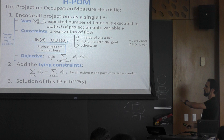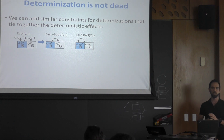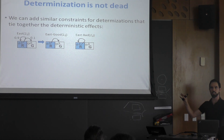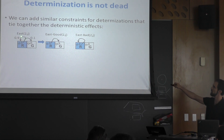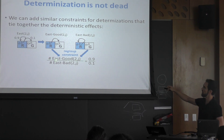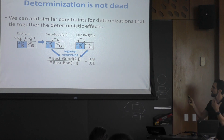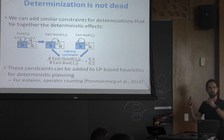Now the question is: is determinization dead? Can everyone throw those papers away and forget about it? No. We're going to do essentially the same thing: in determinization we split a probabilistic action into two pieces, and now we regroup them together. We do this with a constraint saying that, in this example, the number of times 'east_good' happens divided by 'east_bad' respects the ratio of their probabilities. Once you take these constraints and add them to any deterministic planning heuristic based on LPs, those heuristics become aware of probabilities.